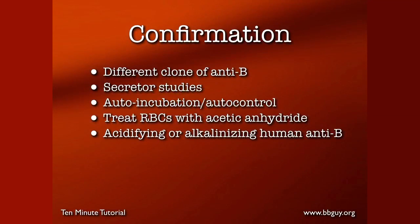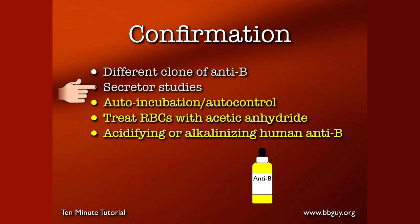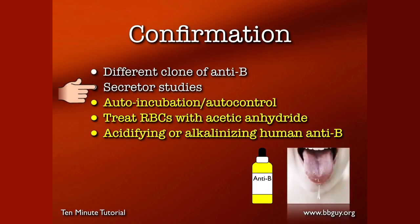Let's talk about how we confirm acquired B. First, if you have something that looks like acquired B and you happen to be using the ES4 clone, look on the package insert for your monoclonal antibody — it will typically tell you whether or not that anti-B reacts with acquired B cells. If you happen to have one that reacts, try a different clone. Second, secretor studies only works on somebody who is an actual secretor. 80% of people will secrete ABO antigens in their saliva. If you look at the saliva of a person with acquired B, you would expect to see the A antigen but not the B antigen, and so that would be helpful.